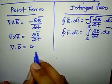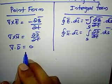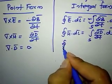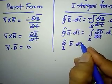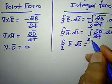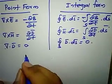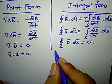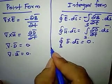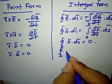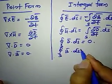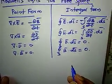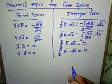There are no charges in free space because there are no impurities, so divergence of electric flux density del · D-bar = 0. In integral form: surface integral of D-bar · ds-bar = 0. Also, del · B-bar = 0 and the closed surface integral of B-bar · ds-bar = 0. These are the Maxwell's equations for free space.